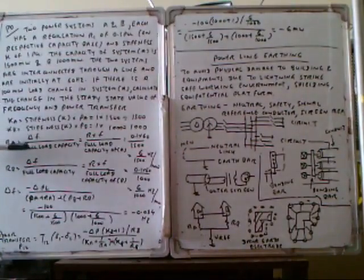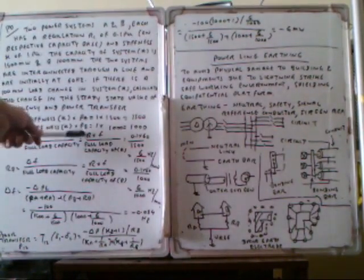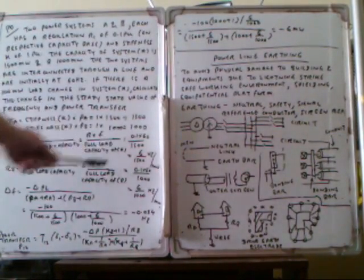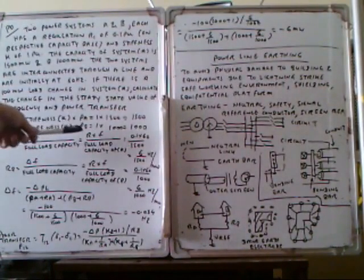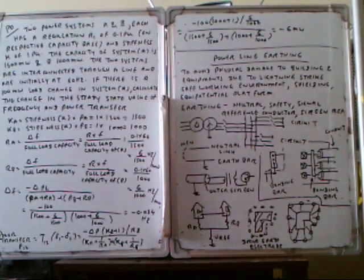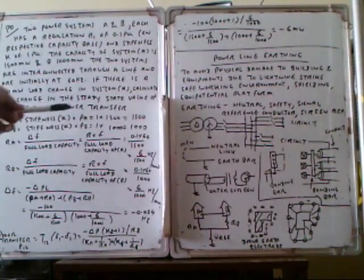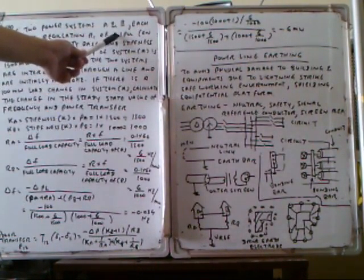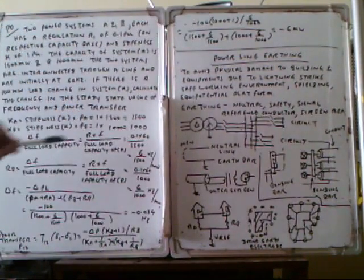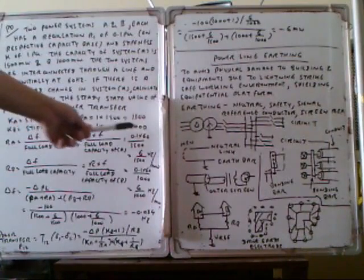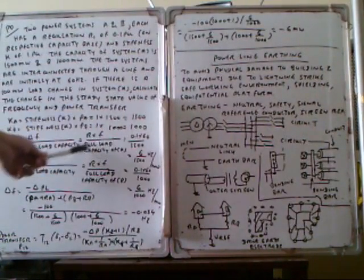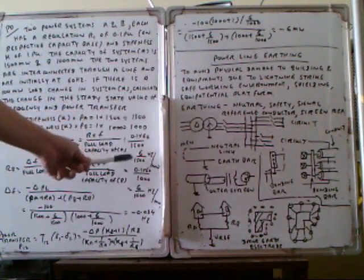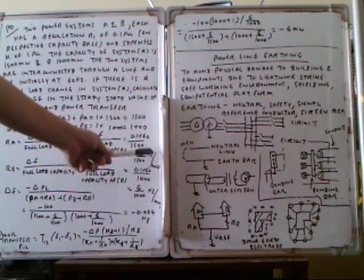R_A is delta F divided by full load capacity. So R multiplied by F divided by full load capacity of A. The regulation R is 0.05, frequency is 60 Hz, and full load capacity of A is 1500 MW, so you get 6 divided by 1500.